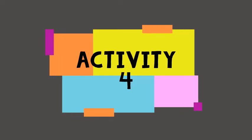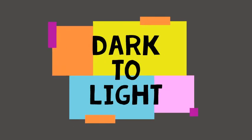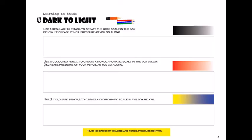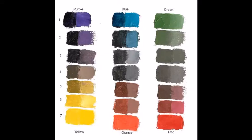Activity 4: Dark to Light. Learning to shade. This exercise teaches basic shading going from dark to light to create a gray scale, a monochromatic scale, and a dichromatic scale.